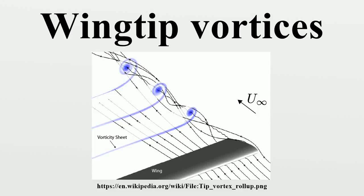Wing-tip vortices are circular patterns of rotating air left behind a wing as it generates lift. One wing-tip vortex trails from the tip of each wing. Wing-tip vortices are sometimes named trailing or lift-induced vortices because they also occur at points other than at the wing-tips. Indeed, vorticity is trailed at any point on the wing where the lift varies span-wise.